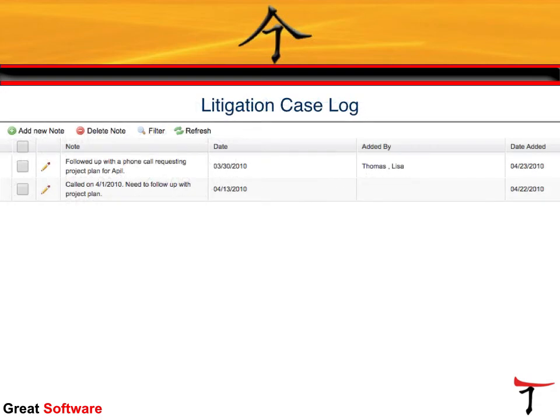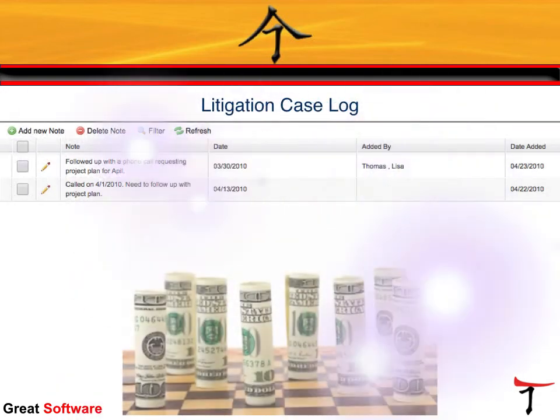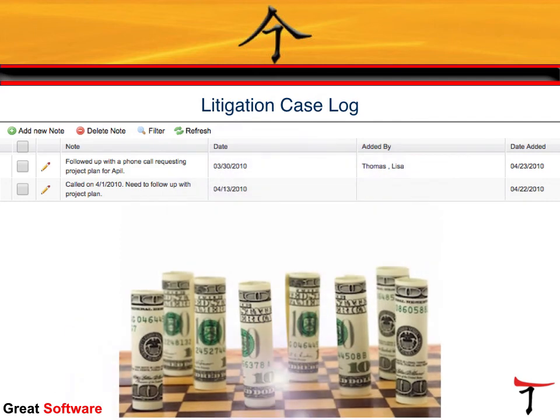The litigation case log tracks various historical references on a case such as case notes, follow-ups, faxes, phone meetings, or in-person meetings. Certain users can be granted access to submit notes which can then trigger automatic notifications to key parties involved in the case, so they are kept current with recent information.